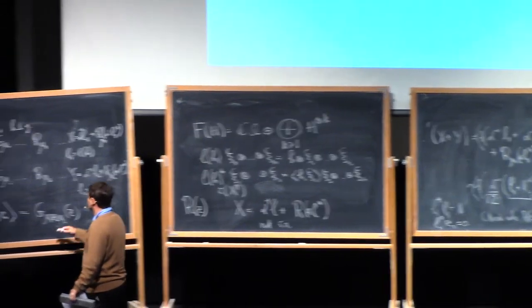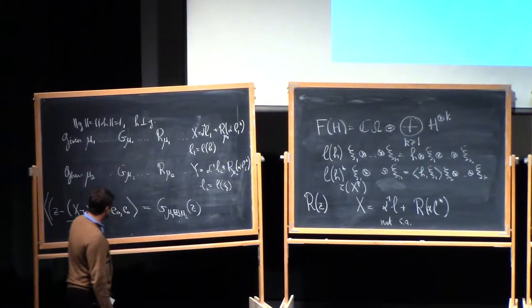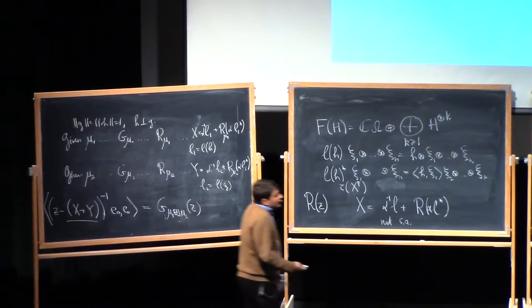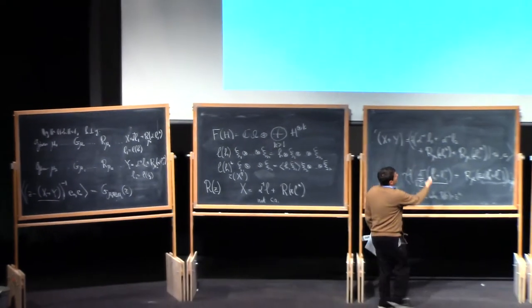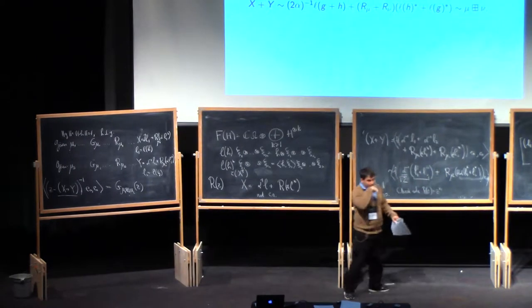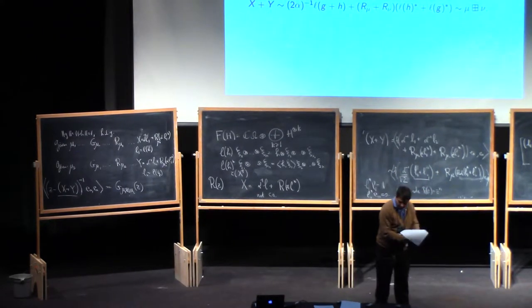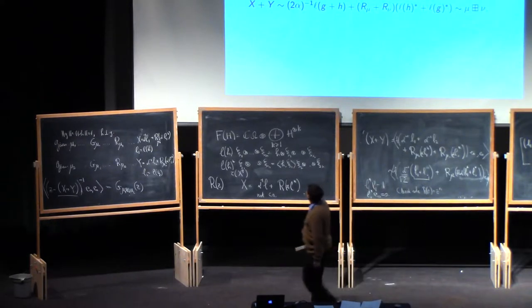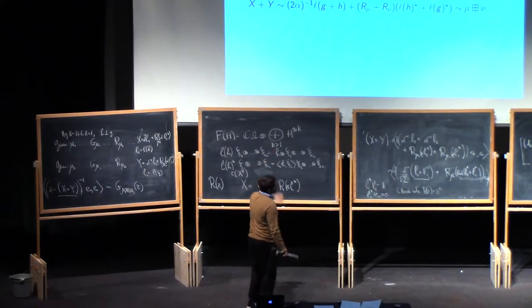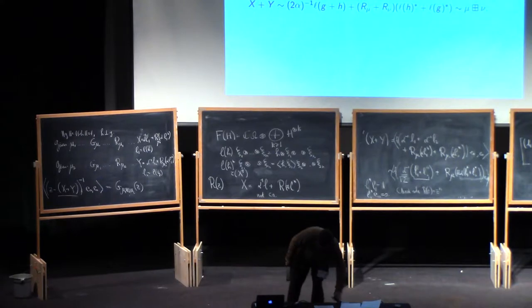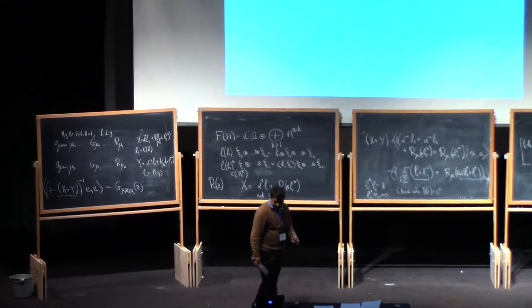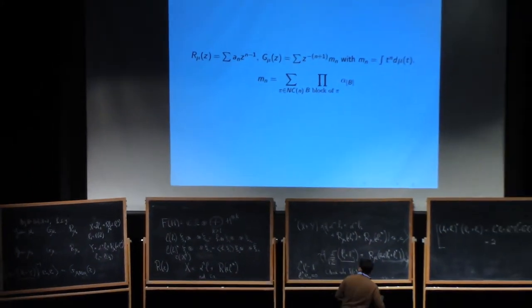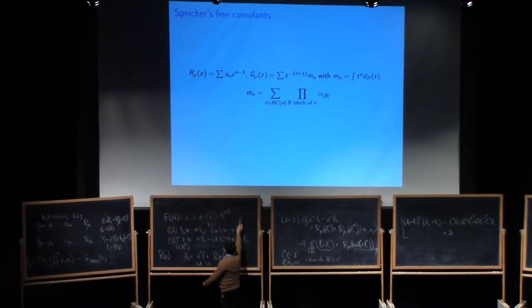And so what that tells you is that the X plus Y, which is the guy whose R transform is mu, is associated with the convolution of the two measures, has this R transform, simply the sum of the two R transforms. All right, so I don't want to spend too much time on just the combinatorics of it, but I just want to mention a very pretty formula which tells you how to connect things together.